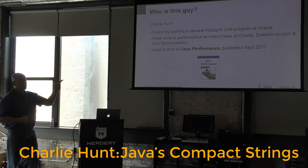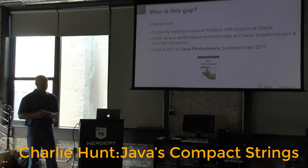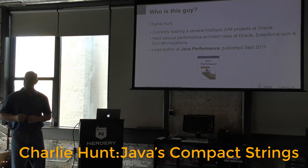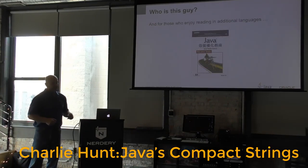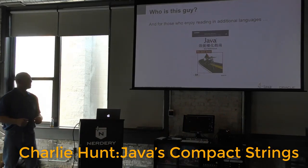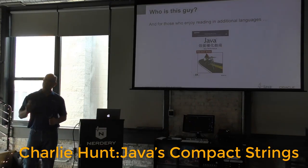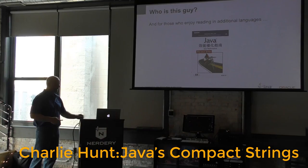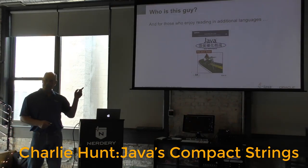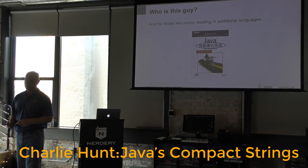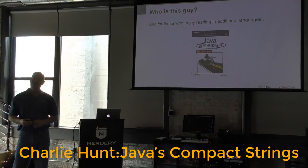About seven years ago, a book called Java Performance was published. It's getting a little dated but much of the content is still applicable. There's also a Chinese version, which is almost twice as thick as the English version. One of my older brothers is a truck driver, and when I gave him a copy, a week later he called back and asked if I could give him one written in English.